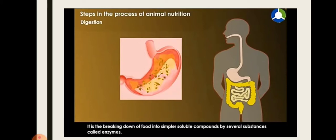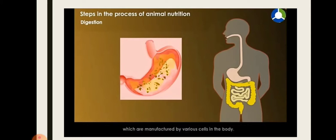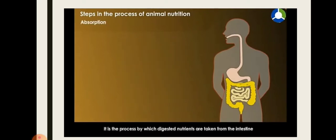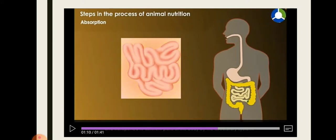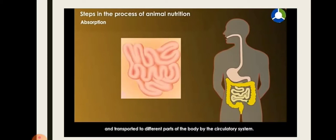The third step is absorption. After the food is digested, it passes through the wall of the small intestine. The food reaches the small intestine after the stomach, and here the nutrients present in the food are absorbed by the wall of the small intestine. Complete digestion takes place in the small intestine, and the nutrients are transported into the blood, which then carries them to different parts of the body through the circulatory system.